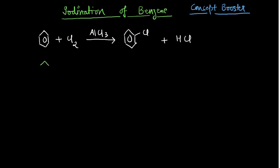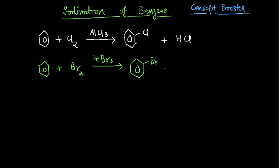Similarly, if you take benzene and react it with bromine using a catalyst like FeBr3 — these are the general reactions you have already studied — you will very beautifully get a very good yield of bromobenzene, with HBr as the byproduct.